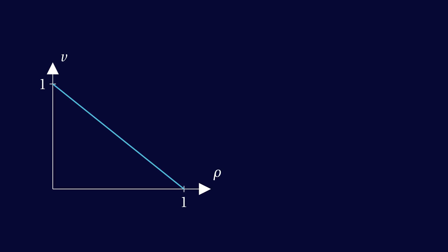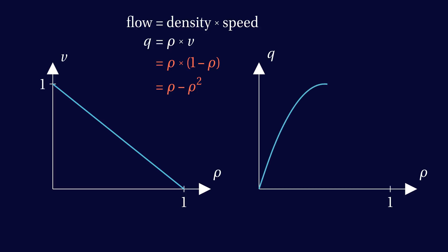When analyzing road traffic, a key quantity is the flow, the amount of cars passing a fixed point in a unit of time. The flow is equal to the traffic density times the speed of the cars. In our model, the flow is a quadratic function of density, rho minus rho squared. Its graph is a parabola which reaches its maximum at half of the maximum density.